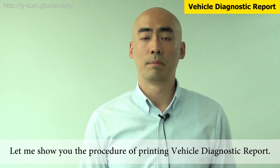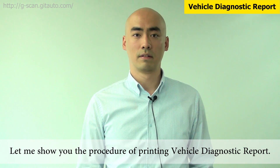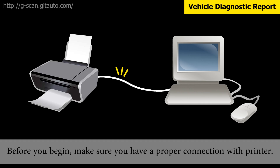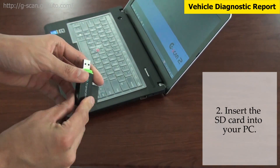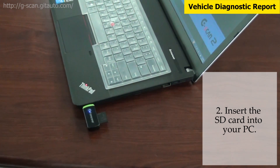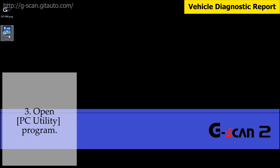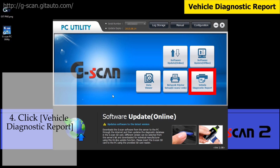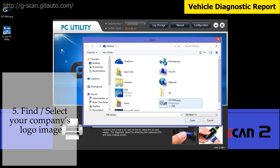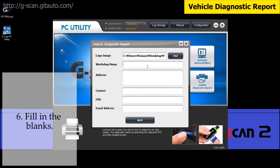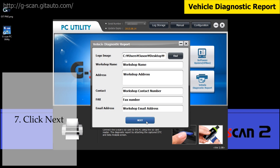Let me show you the procedure of printing a vehicle diagnostic report. Before you begin, make sure you have a proper connection with the printer. Remove the SD card from your G-Scan and insert it into your PC. Open the PC Utility program and click Vehicle Diagnostic Report. Find and select your company's logo image file. Now fill in the blanks, and click Next when you are set with your company's information.